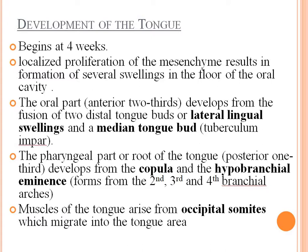The pharyngeal part, or root of the tongue, posterior one-third, develops from the copula and the hypobranchial eminence from the second, third, and fourth branchial arches. Muscles of the tongue arise from the occipital somites which migrate into the tongue area.